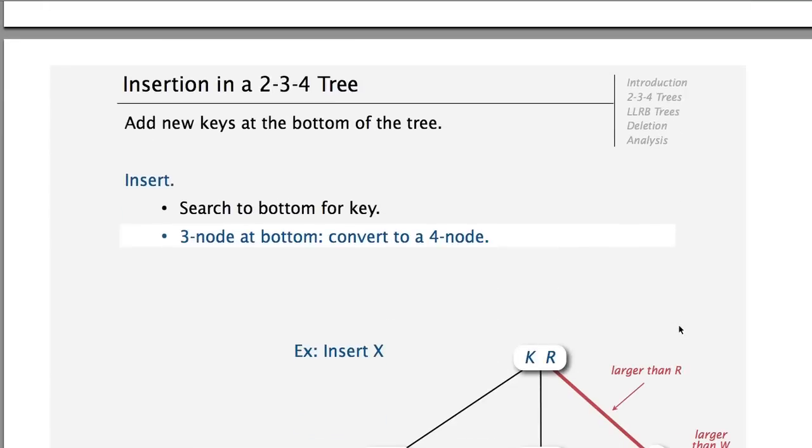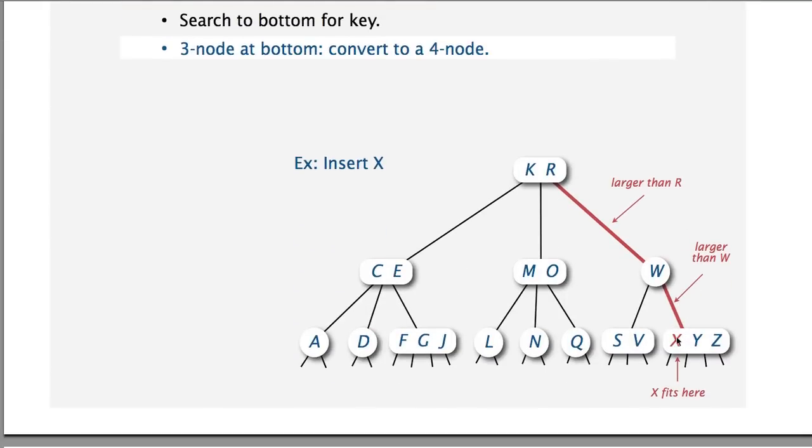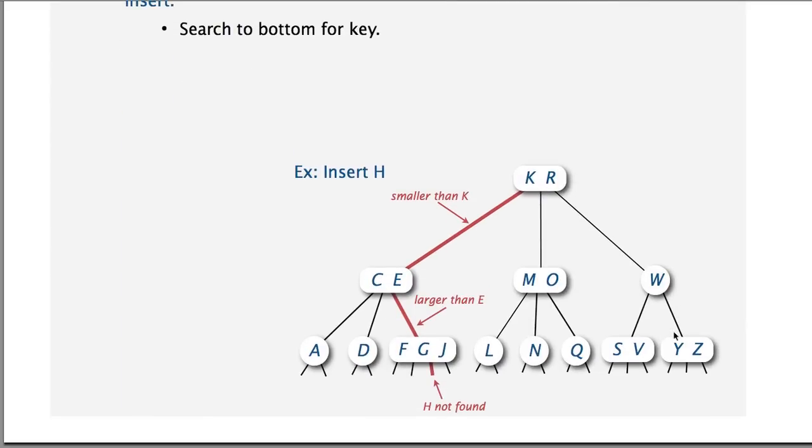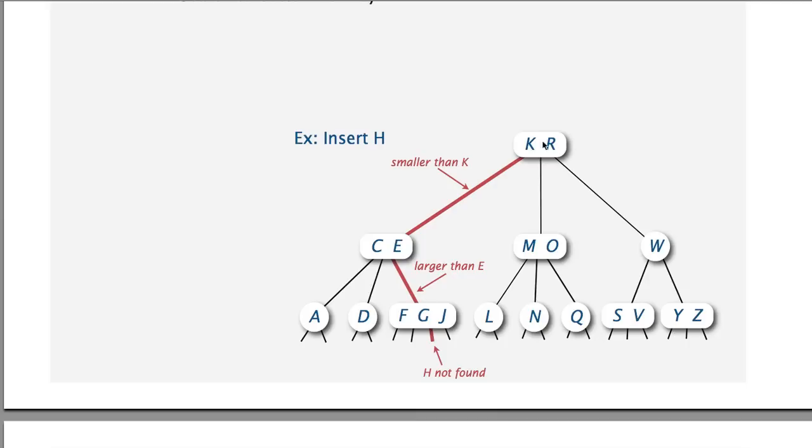So we add the X, and we get this, because X was smaller than Y. So far, we were just adding elements to a node, making it a bigger node. Now, suppose that we want to add an element H here, and we don't find it, but we also can't add it to this node. We can't add it here because we don't allow nodes with four elements. So we need to do something to take care of this. Basically, we need to break up the 4-node.